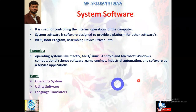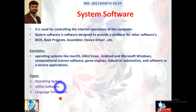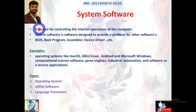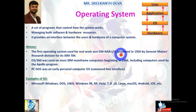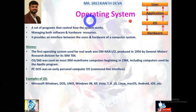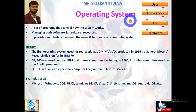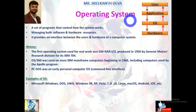System software majorly consists of three different types: operating systems, utility softwares, and language translators. In this session we'll discuss operating systems and utility softwares in detail. Simply, system software is used for system purposes. The first type of system software is called operating systems. An operating system is an important component of a computer system. It can be defined as a set of programs that control how the system works.